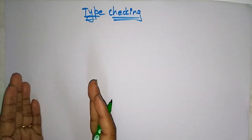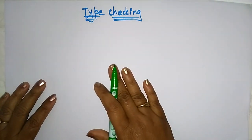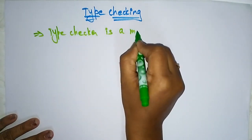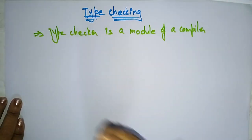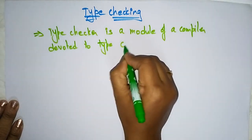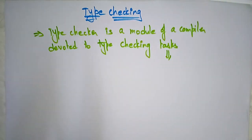The information about data types — such as integer, character, and float — is maintained and computed by the compiler. Regarding type checking, a type checker is a module of a compiler. This module is devoted to the type checking task. The tasks include rules like: indexing is allowed only on an array, and the index must be present.